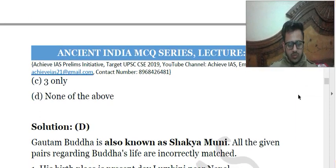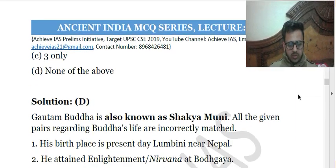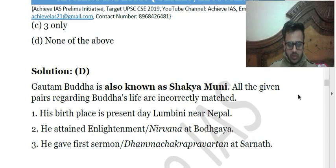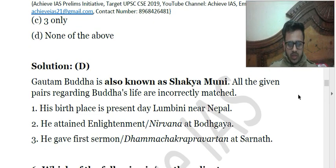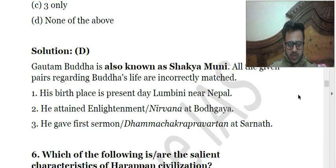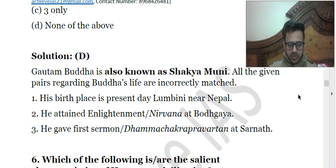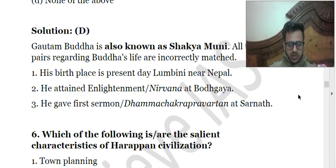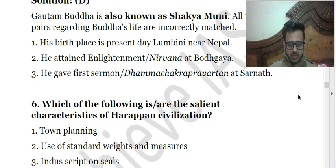Gautama Buddha was also known as Shakyamuni. All the pairs are incorrectly matched: his birthplace was Lumbini, he achieved Nirvana in Bodh Gaya and Mahaparinirvana in Kushinagar, and his first sermon — the Dharmachakra Pravartana — was given at Sarnath.